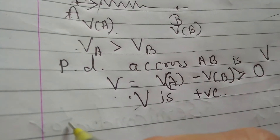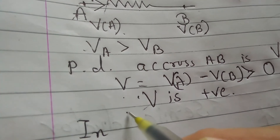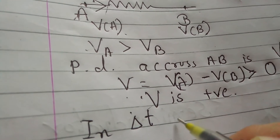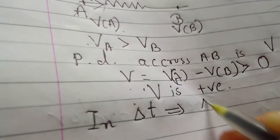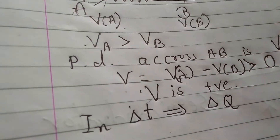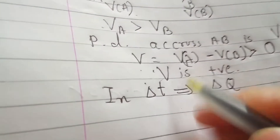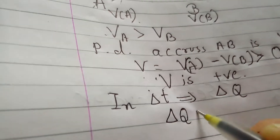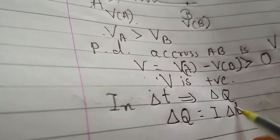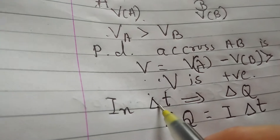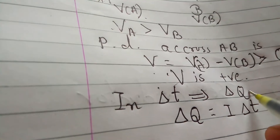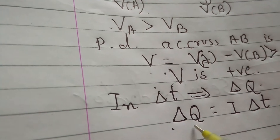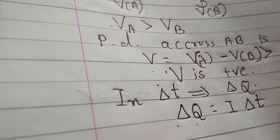Now, in time interval ΔT, ΔQ amount of charge is flowing through this conductor. Then according to the definition of current, we can say that ΔQ is equal to I·ΔT.